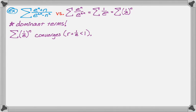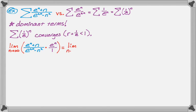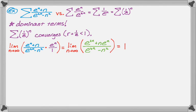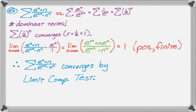I'll jump right to multiplying by the reciprocal. The limit as n approaches infinity of the nth term of the given series times the reciprocal of the constructed series gives us (e^(2n) + n·eⁿ) over (e^(2n) − n²). By the dominant term argument — or applying L'Hôpital's rule — this limit equals 1, which is positive and finite. Therefore, since the constructed series converges, the given series converges by the limit comparison test.